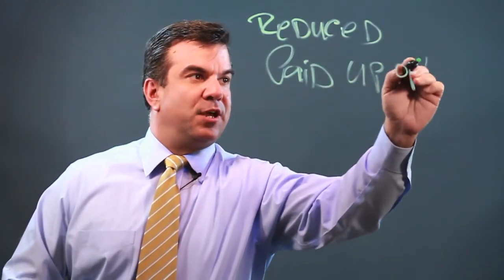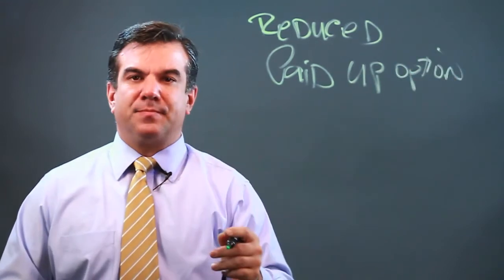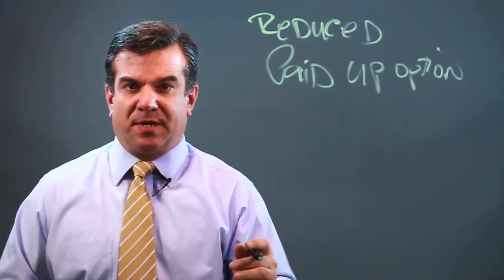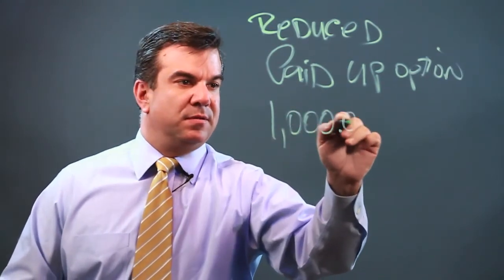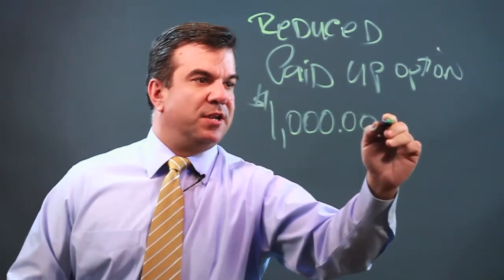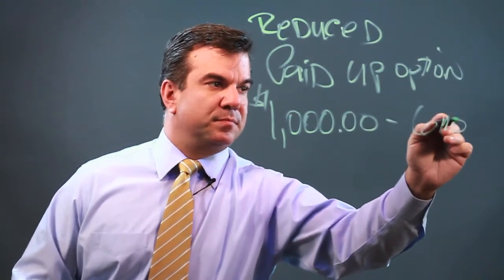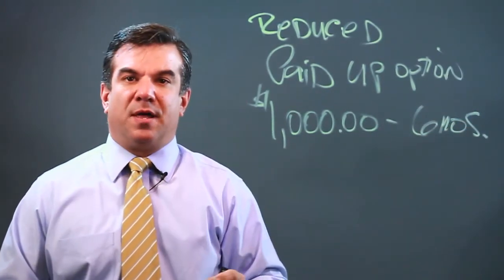Let's say you bought something that you could pay off over six months. Let's say you bought something for a thousand dollars in six months and you have six months to pay it. Well, in the third month you hit the lottery.